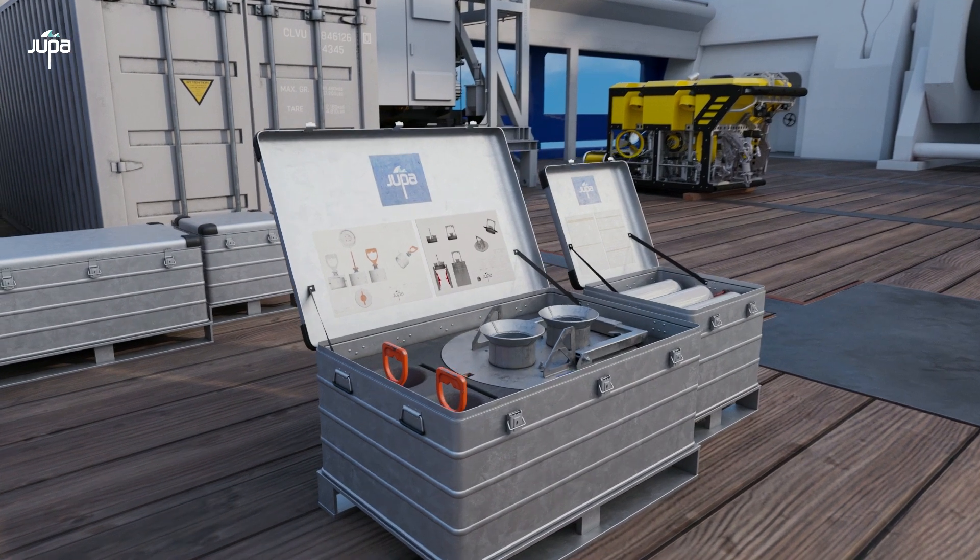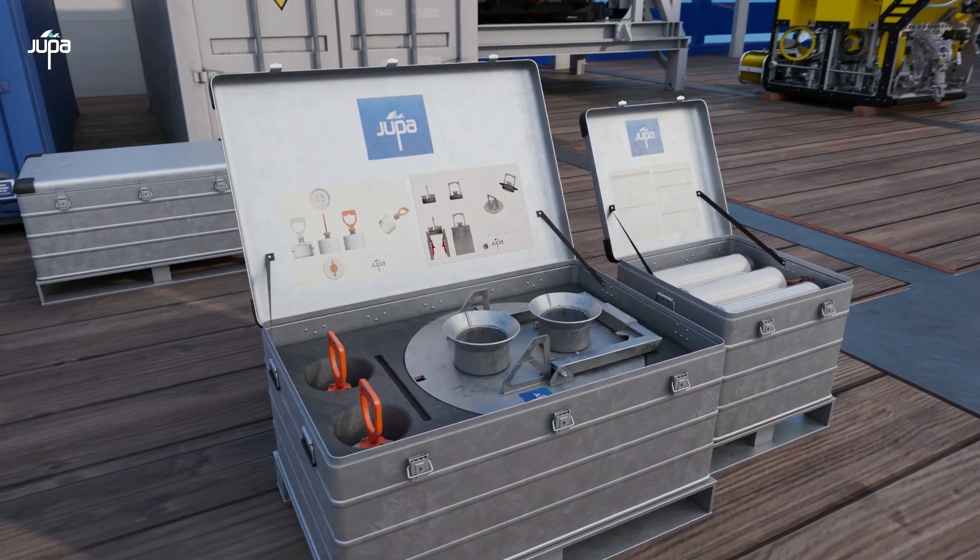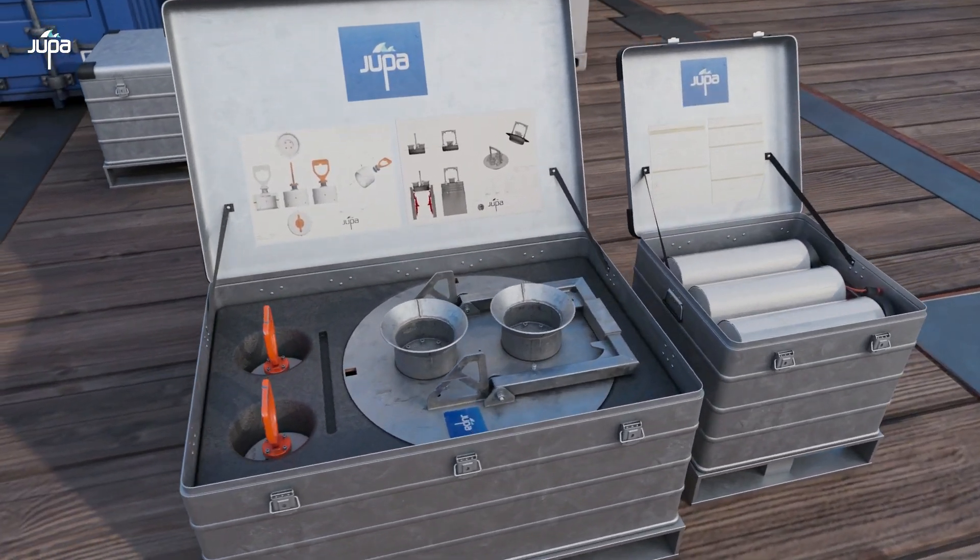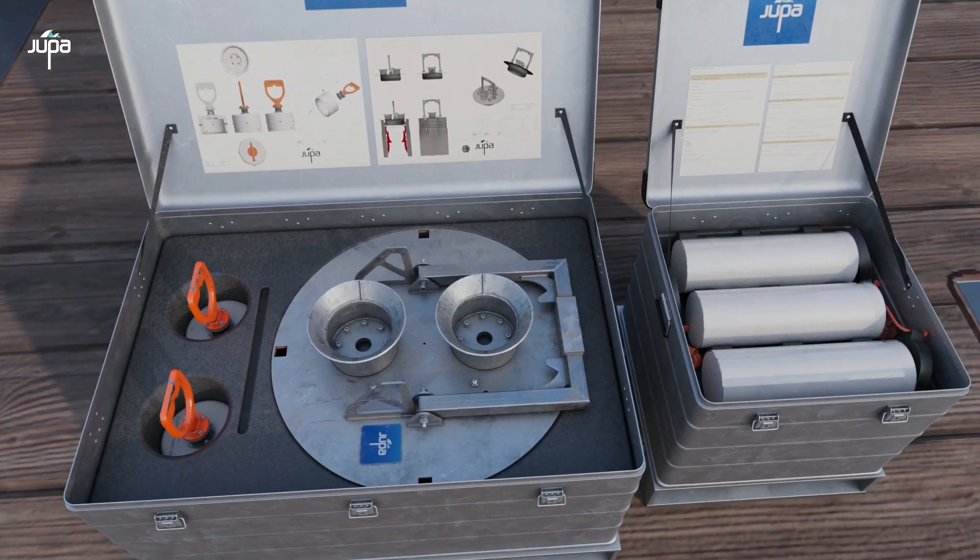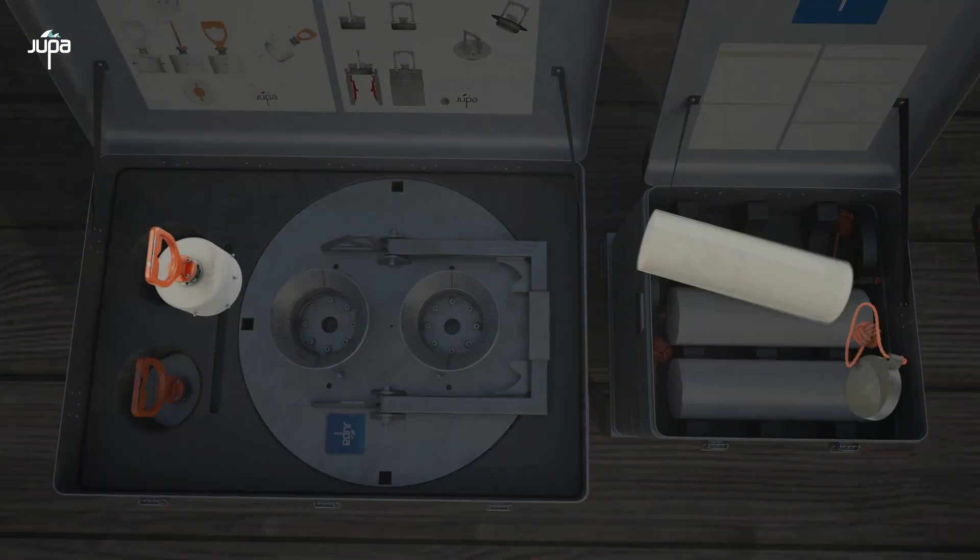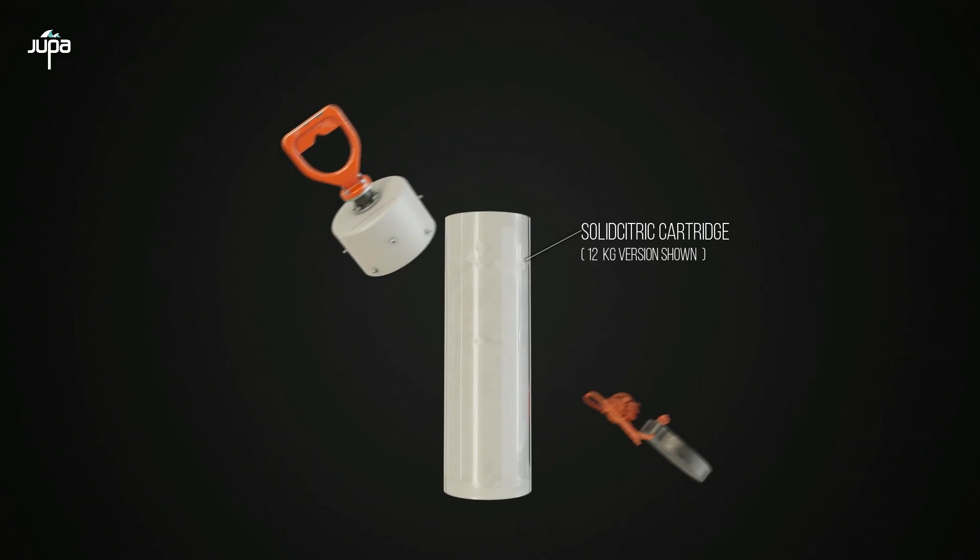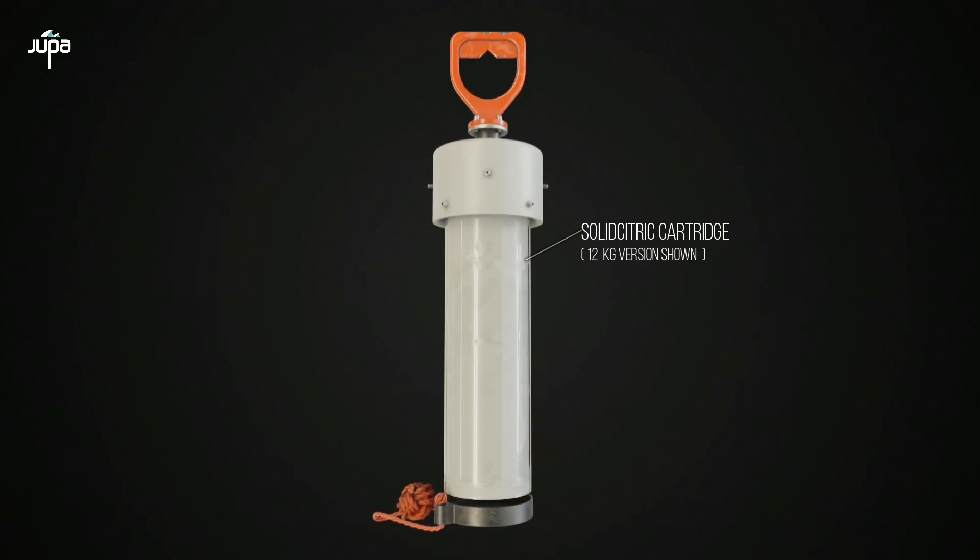The system comprises three components: an interface adapter configured for the interface to be cleaned, the citric acid cartridge, and a cartridge handling tool and end cap.